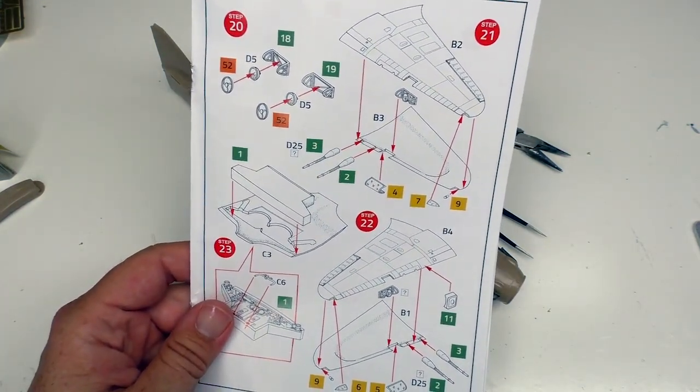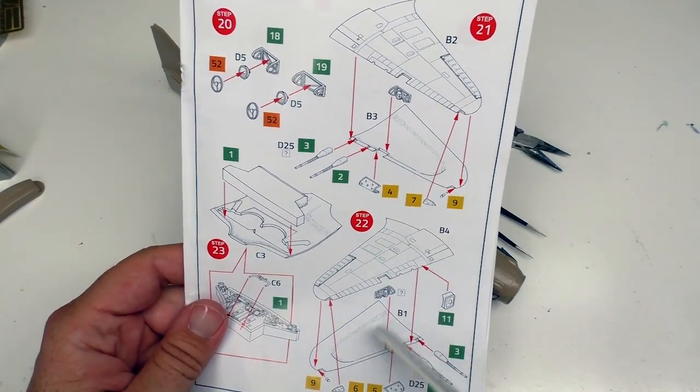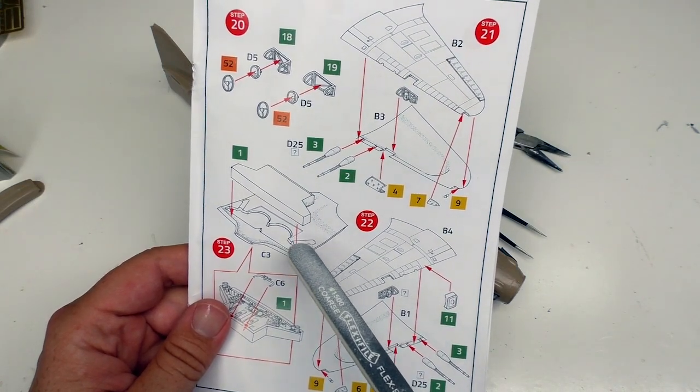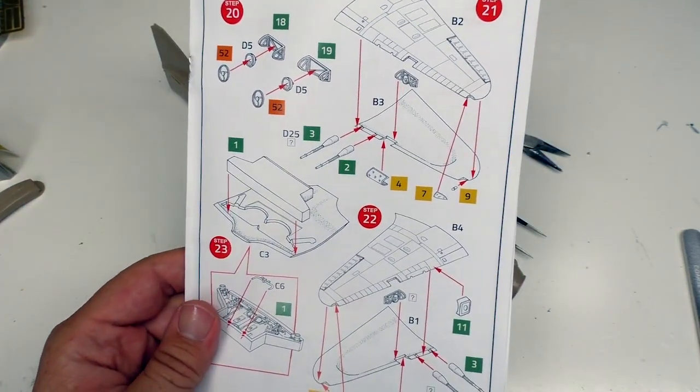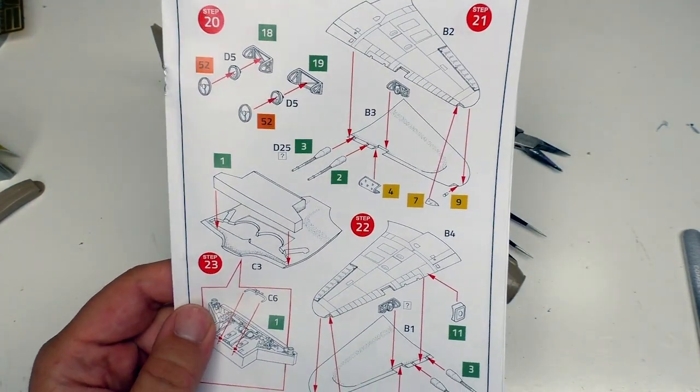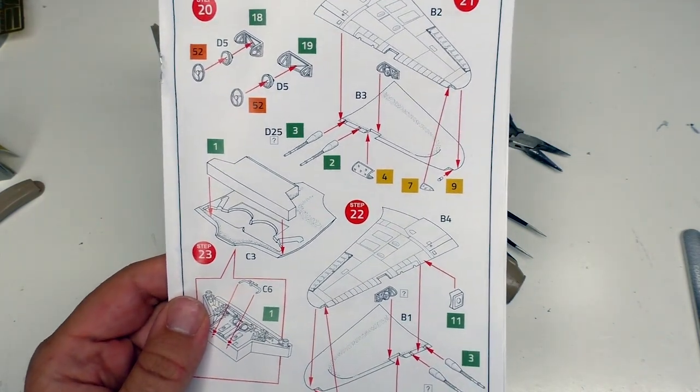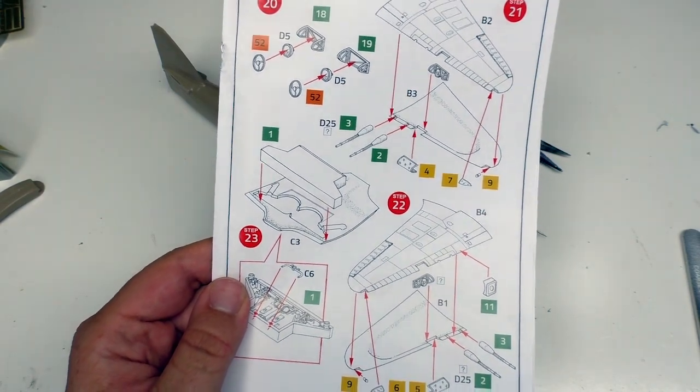Now the wings on this kit are a five-piece affair. You have the top and bottom on both sides, and then you have the central underside piece that also houses the gear bay. Now the gear bay is resin, fine. Removing the pour stub on that proved to be a huge pain in the ass, and I decided to spare you all the monotony of me grinding away at it with a Dremel and a sanding drum.